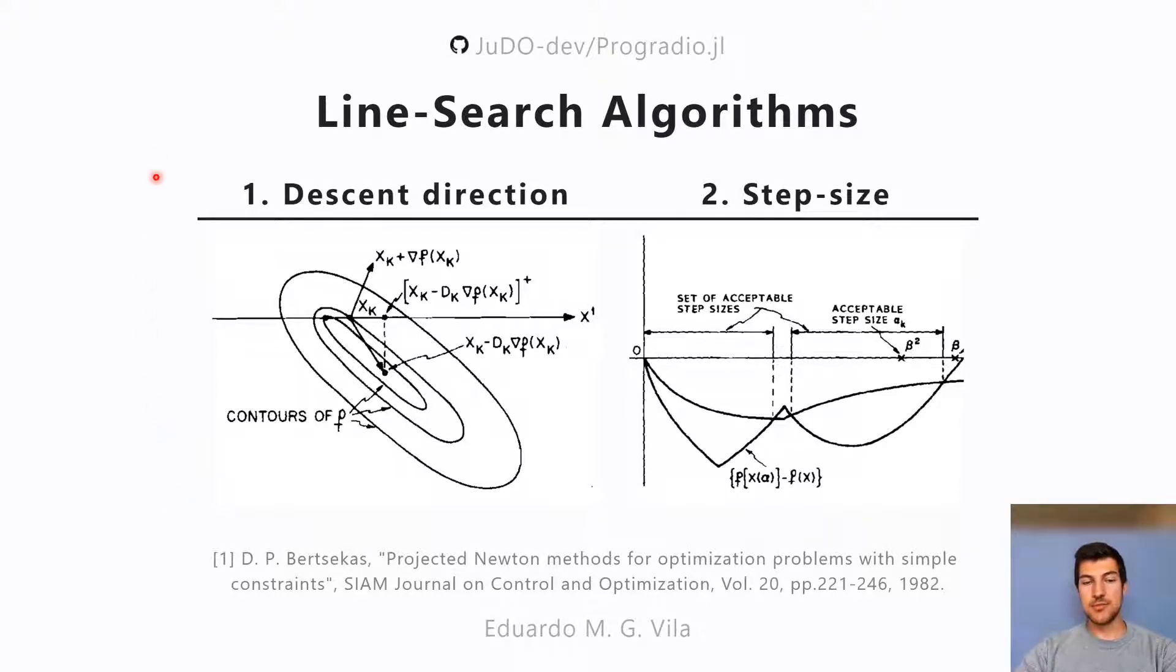Usually you first have a descent direction computation phase where you want to find, from your current iterate, what is a direction that gives you descent, in other words, an improvement in your cost function.